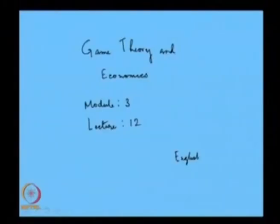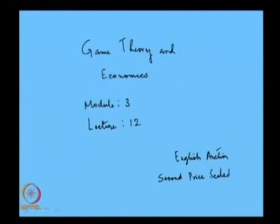What we have been doing is discussing the application of Nash equilibrium in auctions. The first kind of auctions discussed so far is what is known as the English Auction, also called the Second Price Sealed Bid Auction. We have seen that there are an infinite number of Nash equilibria in the Second Price Sealed Bid Auction.